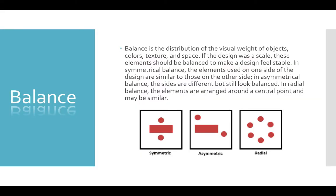The first principle is balance. Balance can be thought of in three different ways — it's really about how well you distribute the objects of your artwork. If it's symmetrical, things are going to be perfectly balanced, aligned equally on all sides. Asymmetrical means one side is going to be heavier than the other. And radial is when you have your elements arranged around a central area.